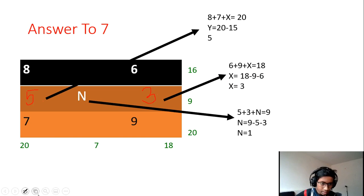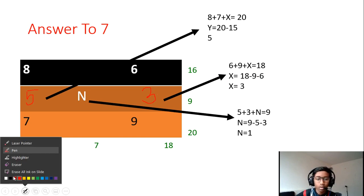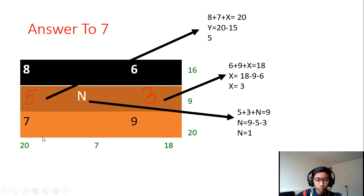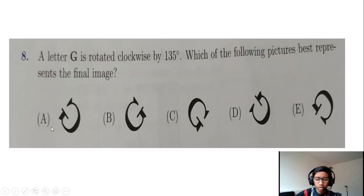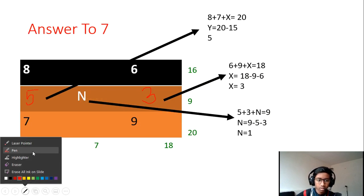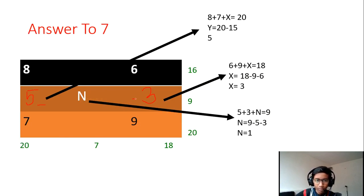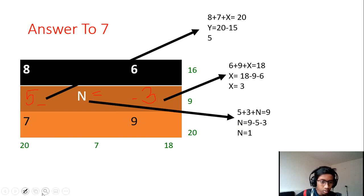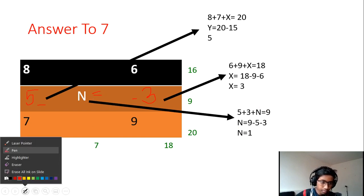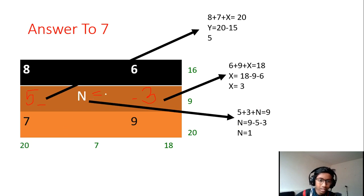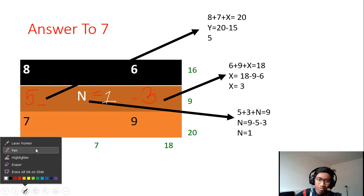Both sides now have values. We have to find the unknown in the middle, which is n. So 5 plus 3 plus n equals 9. Five plus 3 is 8, so n equals 9 minus 8, which means n equals 1. That's the end of question number seven.